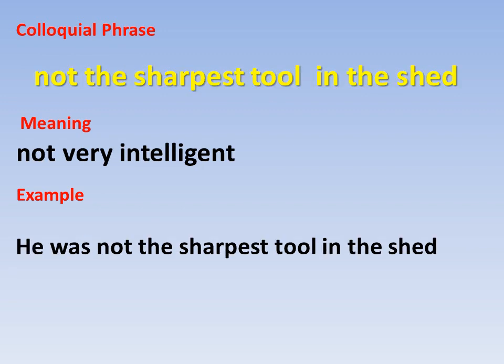'Not the sharpest tool in the shed' — هاد المصطلح بنستخدمه لما منكون نحكي عن حدا not very intelligent، حدا مش نبيه، مش ذكي. For example: 'He was not the sharpest tool in the shed' — يعني ما كان أذكى حدا في المكان.